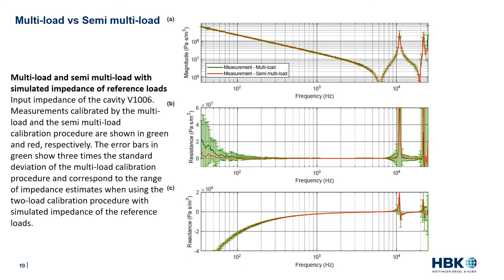The two-load calibration procedure can be further improved by measuring on more than two known reference loads, yielding an over-determined set of equations for finding the unknowns. However, this requires all reference loads to be measured at any measurement session, which may be quite cumbersome in an in vivo study on humans spanning several days or weeks. Therefore, we developed a simpler method called the semi-multi-load, where only two reference loads — as with the two-load method — are measured at each measurement session. The calibration is then performed as post-processing involving measurements on all reference loads only once, and dividing the frequency range in two.